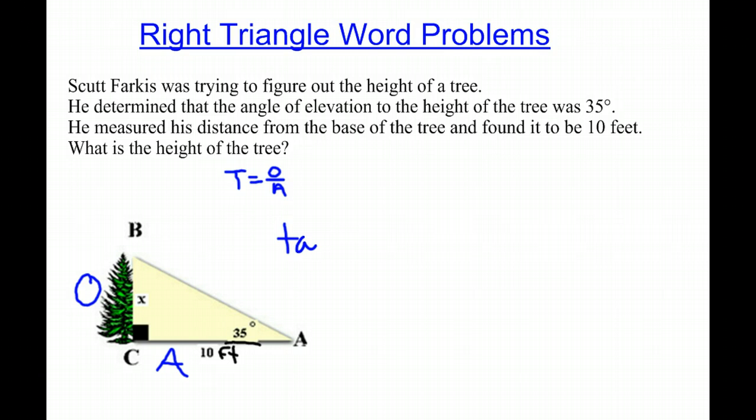So we say tangent of the degree, 35, will equal our opposite, which is X, over the adjacent, 10. So to get X by itself, we simply multiply by 10. So we move it over to the other side.